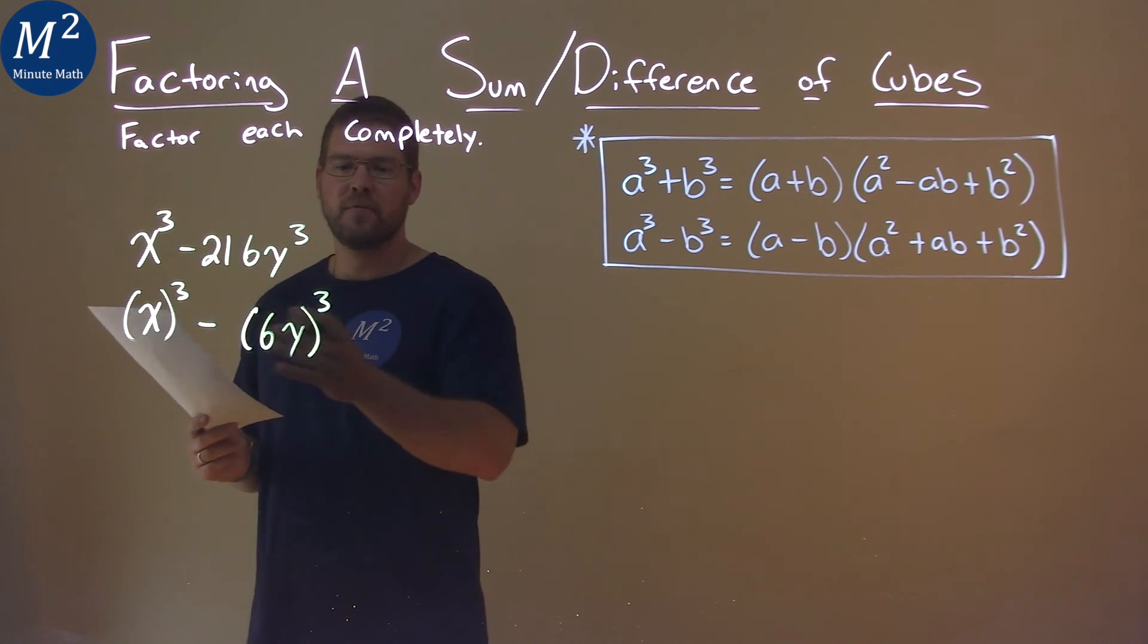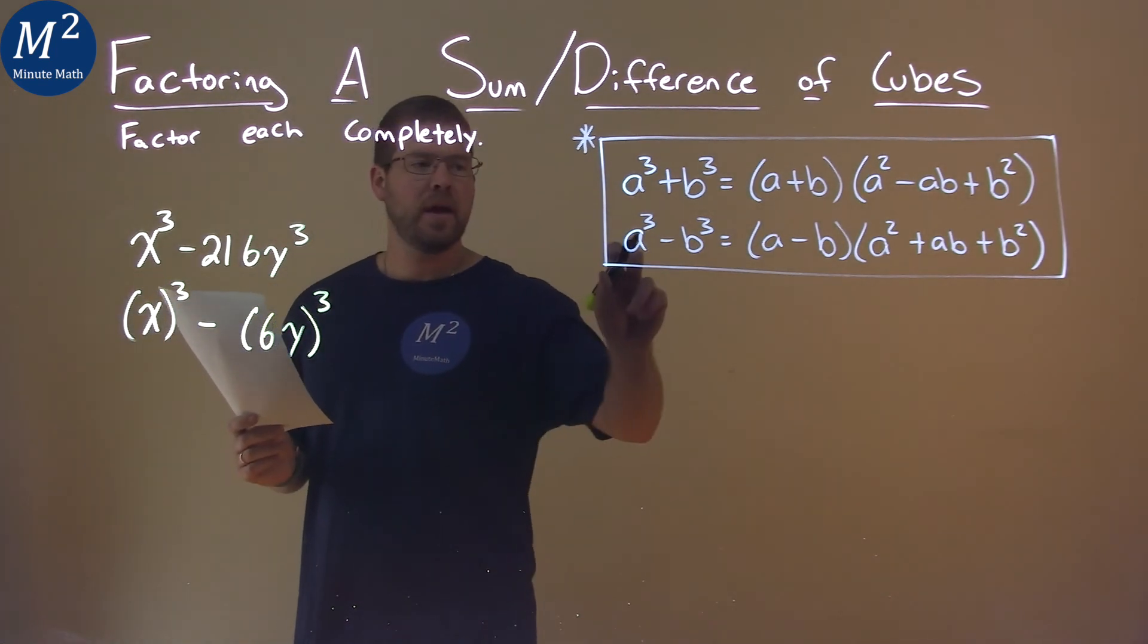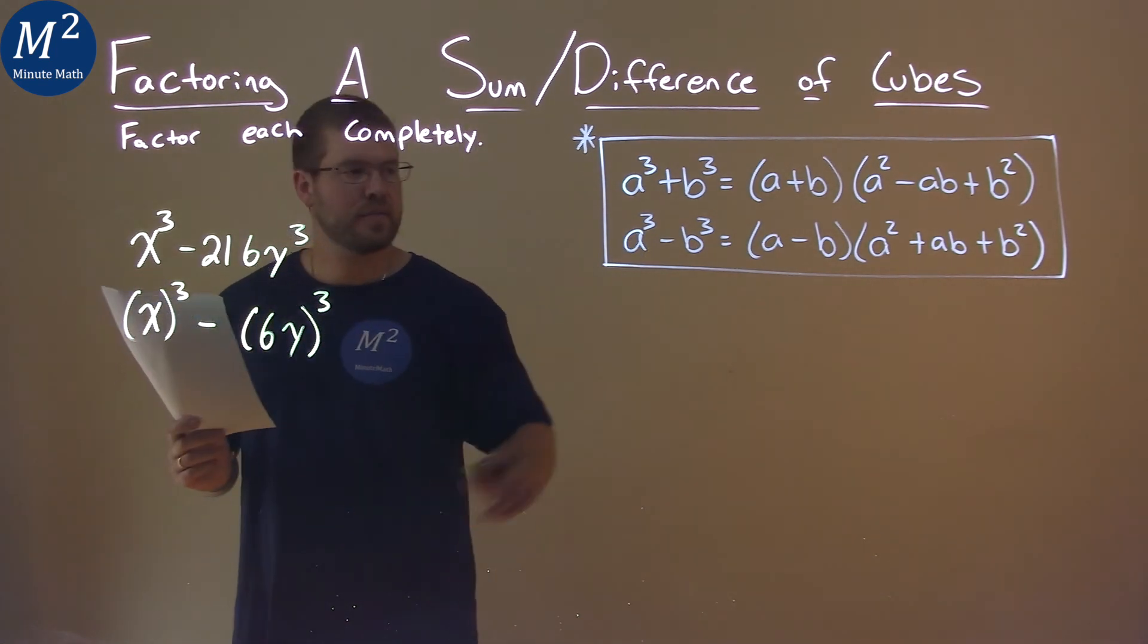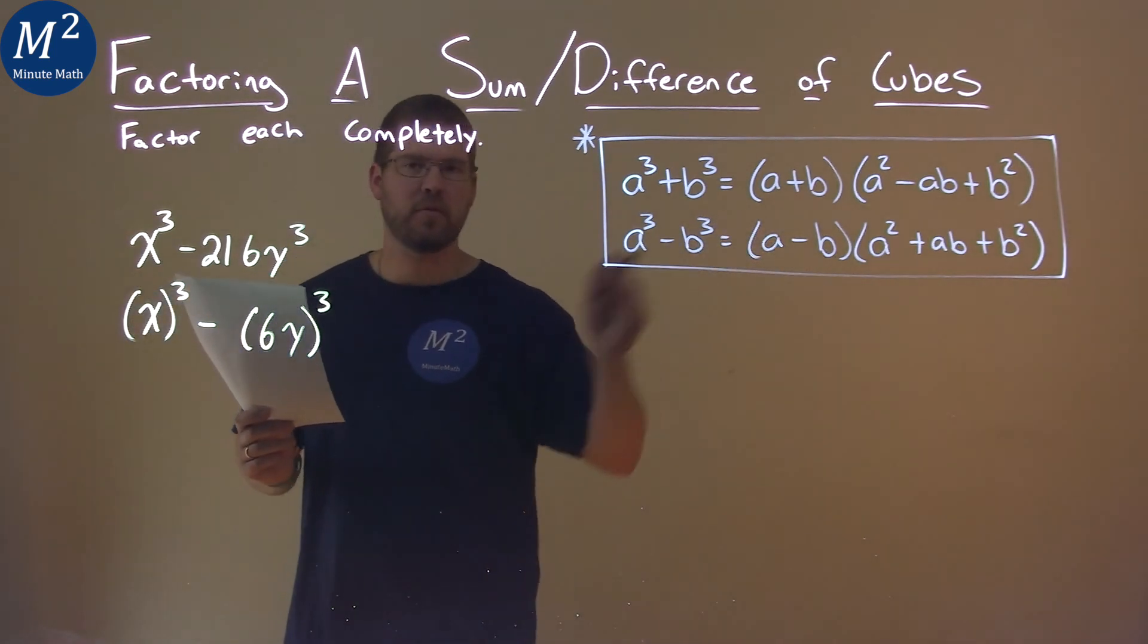So now we have it in this form. We can use a formula. Our a value is going to be x, and our b value is 6y. So let's use our formula.